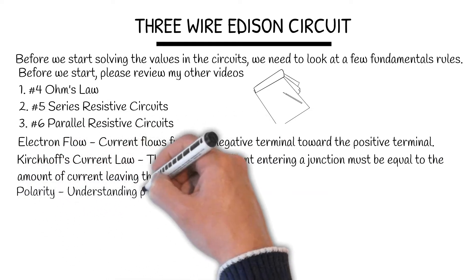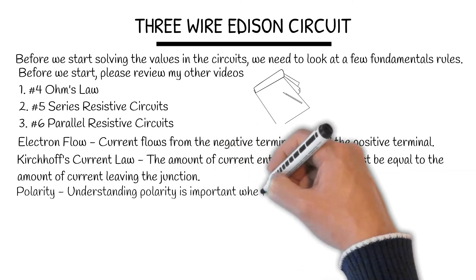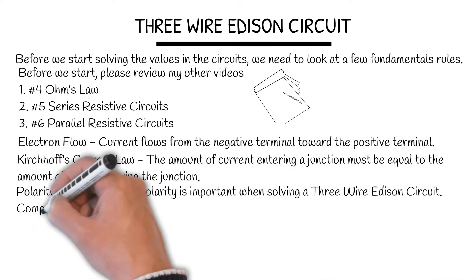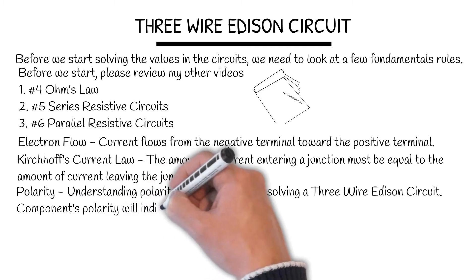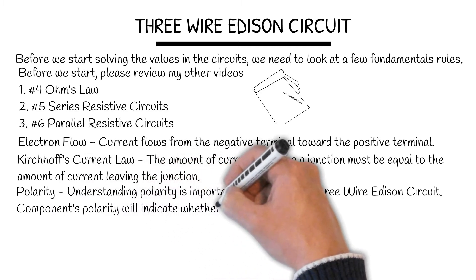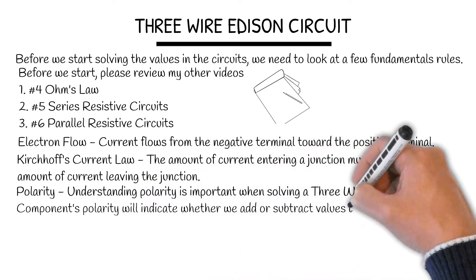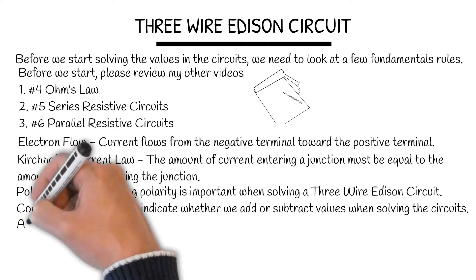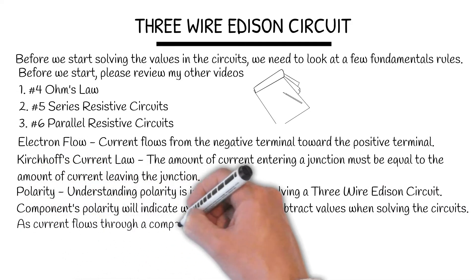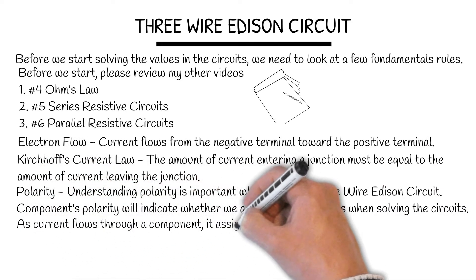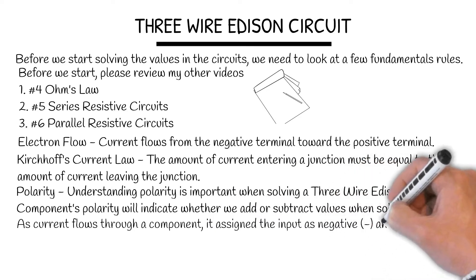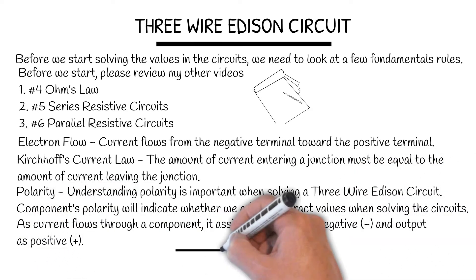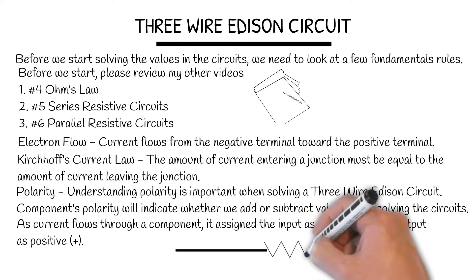Understanding polarity is important when solving the three-wire Edison circuit. A component's polarity will indicate whether we add or subtract values when solving the circuit. A current flowing through a component assigns the input as negative and the output as positive. Here's an example.